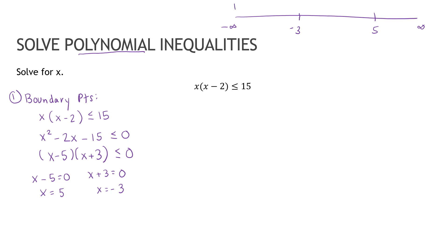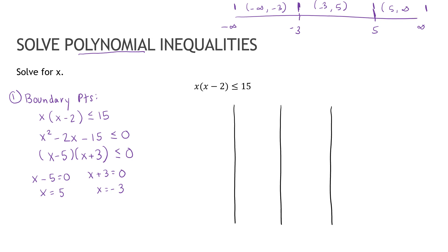I'm going to take my entire domain from negative infinity to positive infinity and divide it using those boundary points. From here to here is the interval from negative infinity to negative 3. From negative 3 to positive 5 is the second interval. And from 5 to infinity is the third. I'm going to make a table — this is something I'll ask you about in your assessment, so it's worth learning. I have 3 intervals, so I need 4 columns.